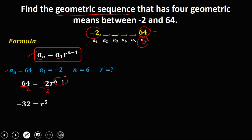To solve for r, since we have r to the power of 5, we need to get the fifth root to solve for r — and the fifth root of negative 32 is negative 2. Therefore, r is equal to negative 2.